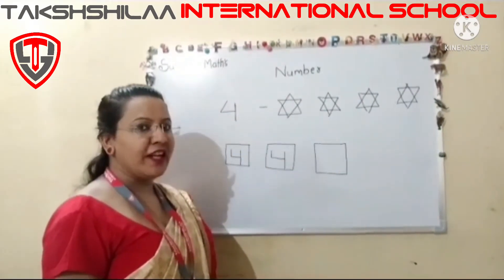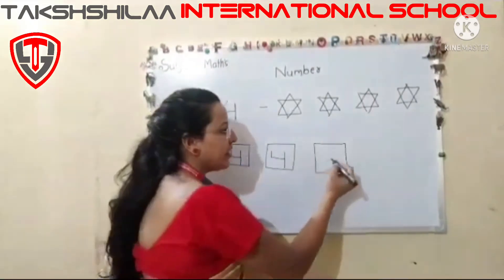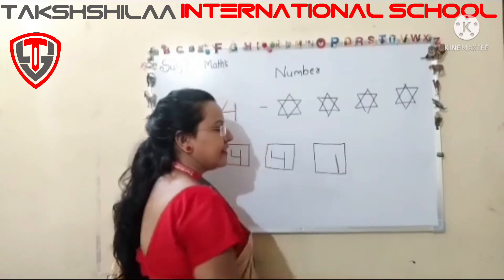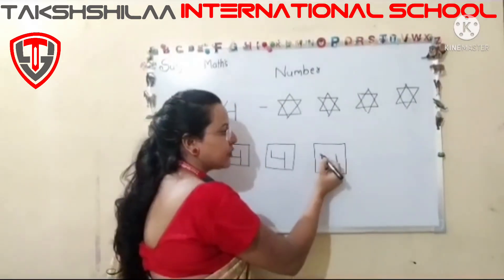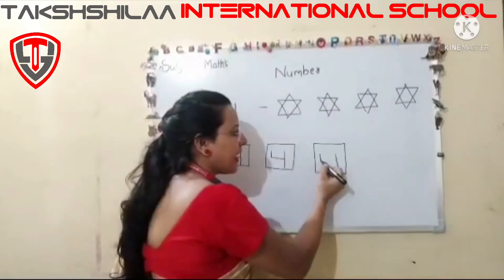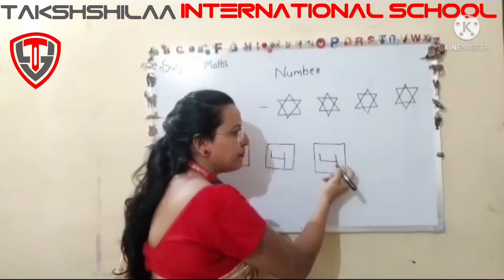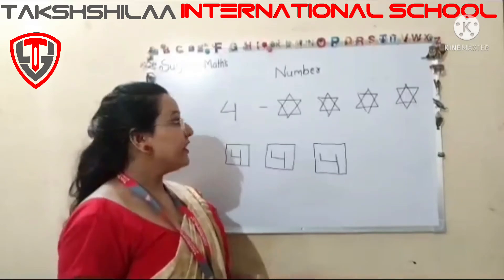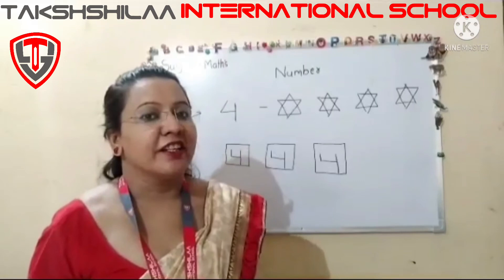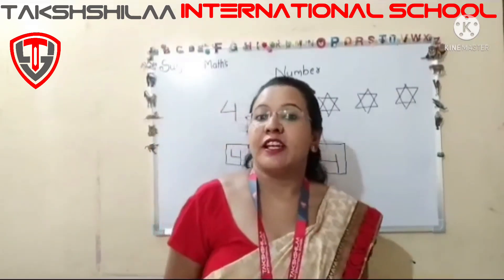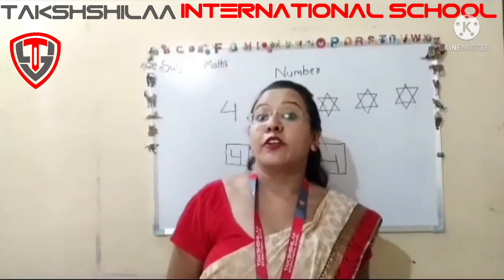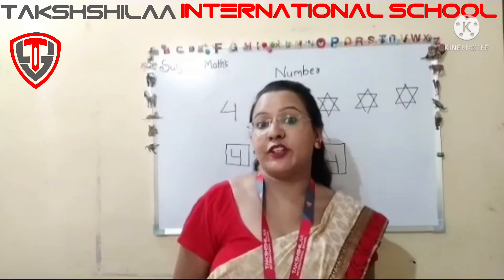Okay? Now once again look here. First you have to draw a standing line, then a small standing line, then a sleeping line — that makes number four with four stars. Now dear children, you have to practice how to write numbers one, two, three, and four at your home.